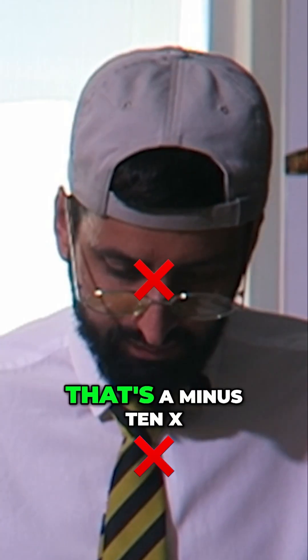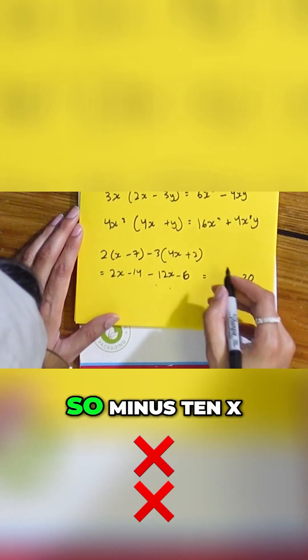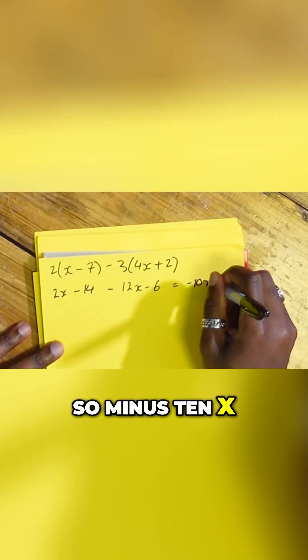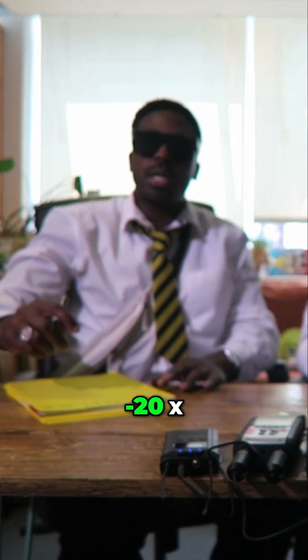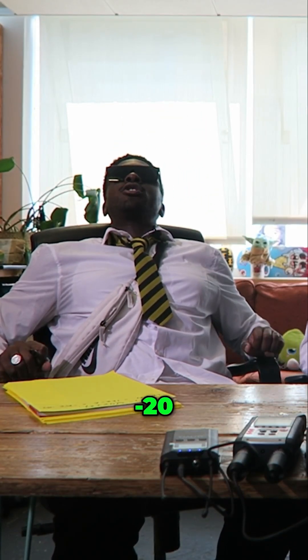Two X minus 12 X. That's a minus 10 X. It's a minus 10 X. Minus 10 X minus 20. The answer is minus 20 X... Minus 20.